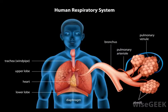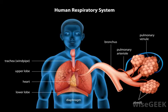The bronchial tree is an essential part of the respiratory system. It consists of several interacting structures, such as the bronchi, bronchioles, and alveoli. These structures work together to provide a network system between the lungs and the trachea. Without this system, a person could not breathe properly.